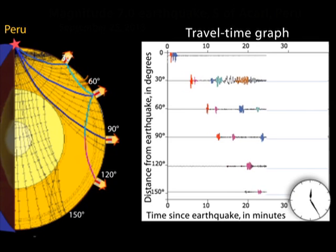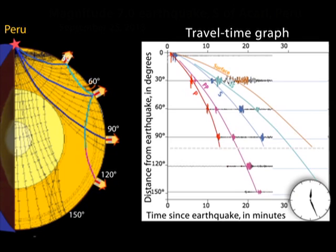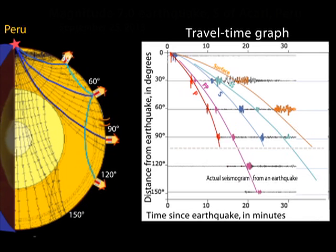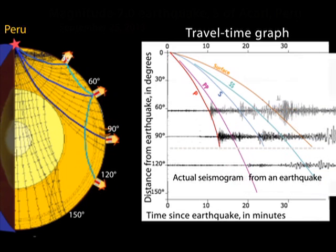The much slower surface waves travel from the earthquake along the shallow Earth's surface. They are often the most destructive due to their rolling nature.